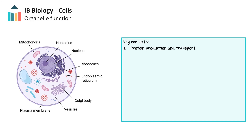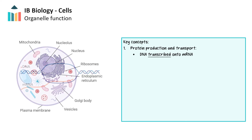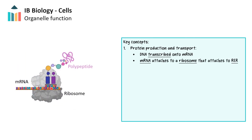We are going to trace the path of a protein as it's produced in the cell to explore organelle function. Let's imagine it's a digestive enzyme that could potentially harm the cell, and we'll see how the cell manages to produce this enzyme without causing self-digestion. The production of the protein begins in the nucleus, where a specific segment of DNA known as a gene is transcribed into messenger RNA. This separation allows for further modifications of the messenger RNA before it encounters a ribosome. Once modified, the messenger RNA passes through a nuclear pore and attaches to a ribosome embedded in the rough endoplasmic reticulum. As the messenger RNA is translated, the growing polypeptide is directed into the lumen of the rough endoplasmic reticulum.